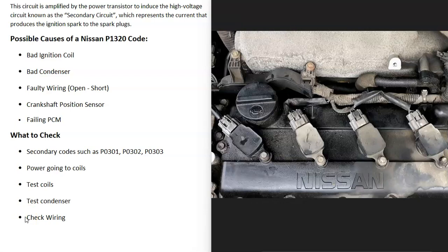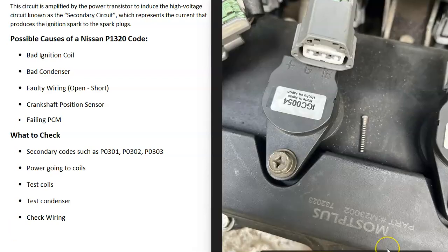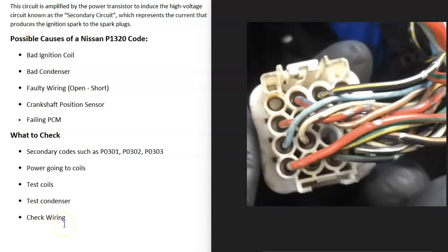You can also test the ignition coils themselves — there are good YouTube videos covering different testing methods. Additionally, locate and test the condenser to confirm it's functioning. After checking those components, inspect the wiring for any open or short circuits. Finding a wiring fault can be difficult, but visually inspect for any obvious signs of damage.